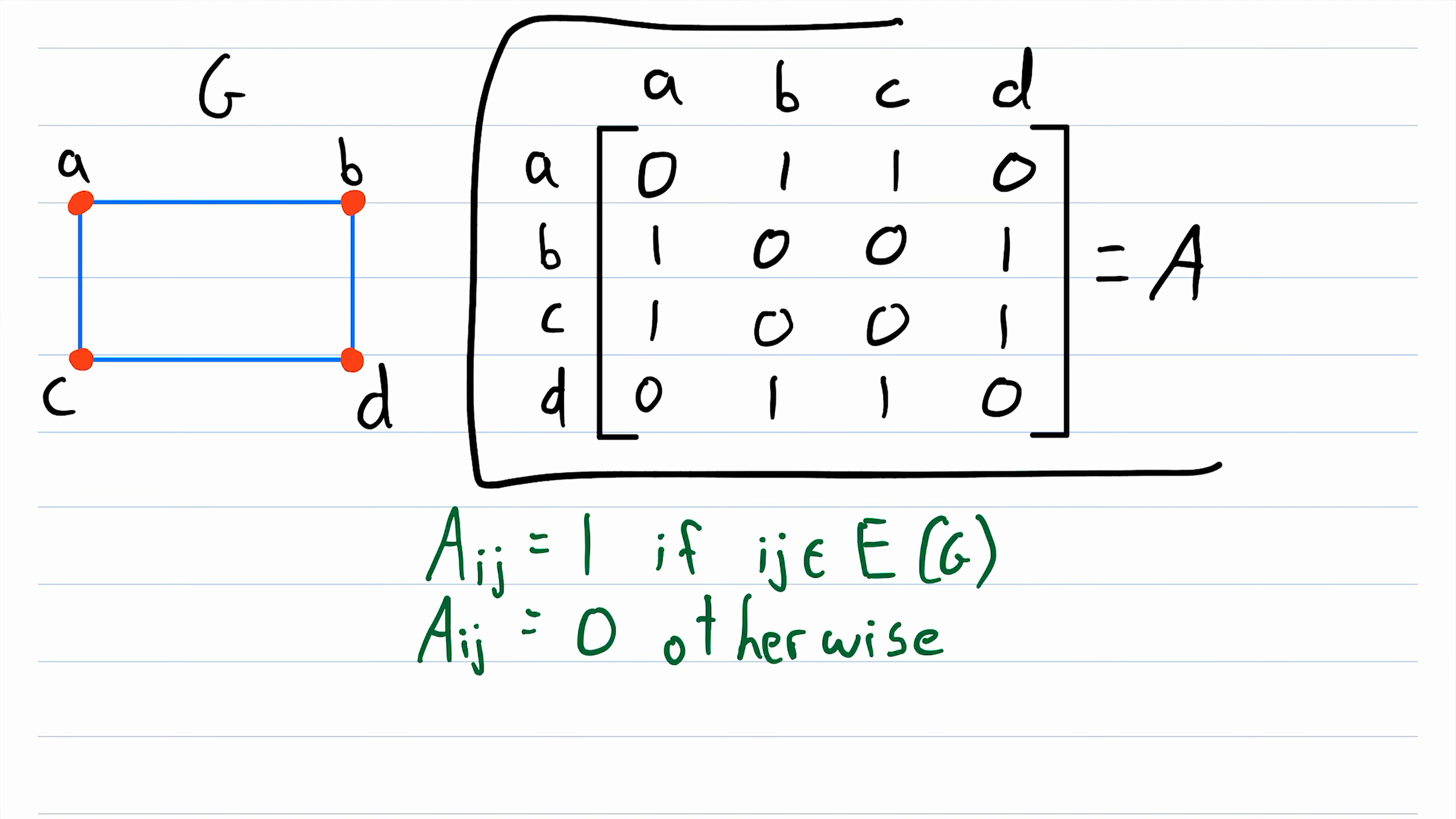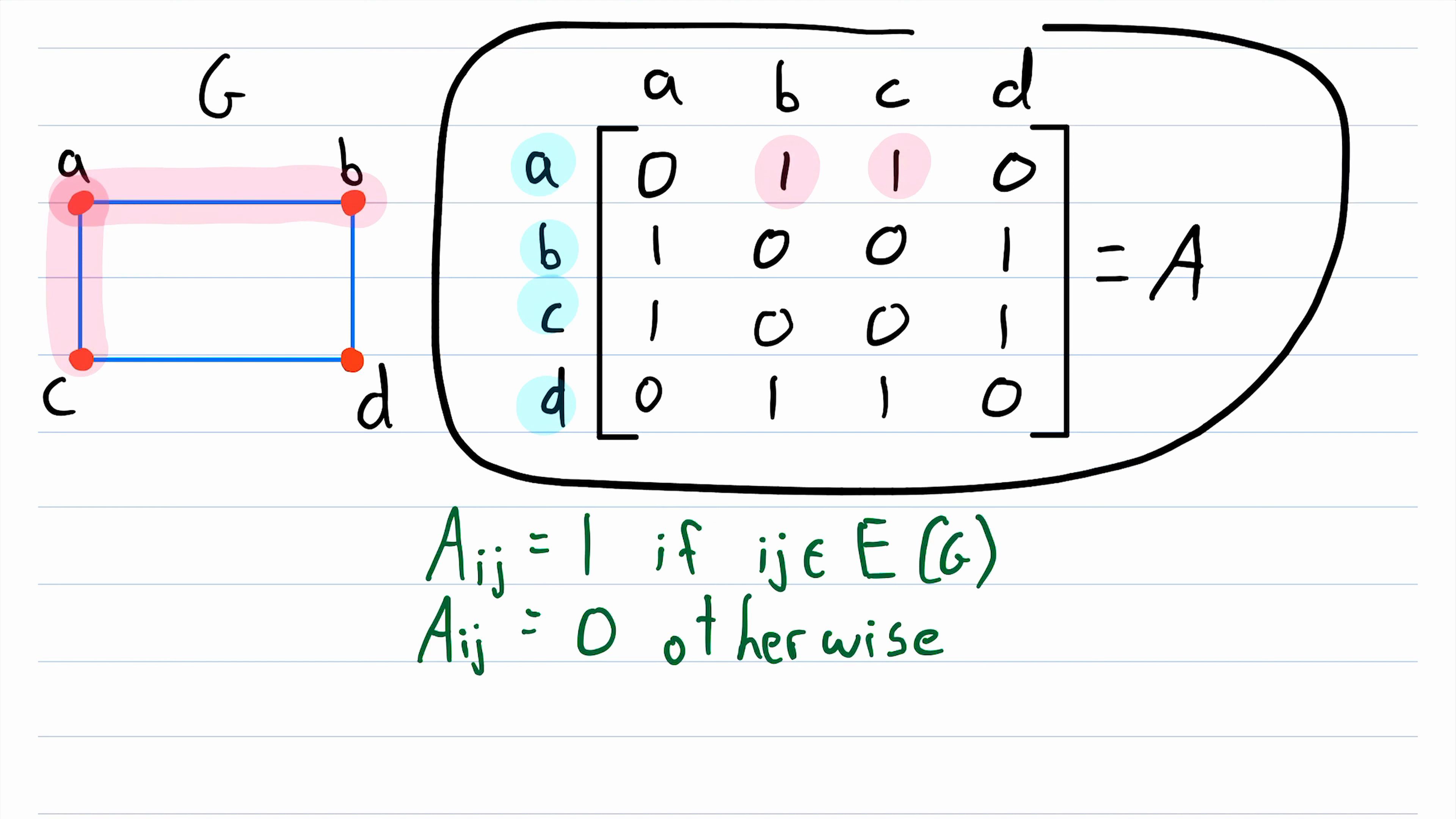Also notice how we could reconstruct G entirely from this matrix. We could see that it has four vertices A, B, C, and D from looking at the rows or the columns, and then looking here we'd see there's an edge joining A to B, looking here we'd see there's an edge joining A to C, and so on. We could recreate the graph completely just from this matrix, which I think is really cool.